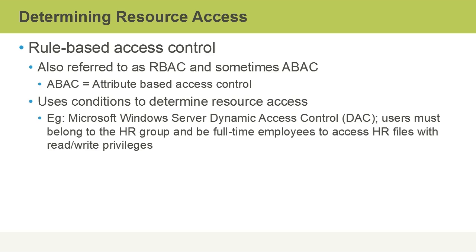Full-time employees could be determined through group membership, but one of the great things with condition or rule-based access control is that we don't have to use groups. In the case of a Windows Active Directory user account, maybe there's an attribute filled in that determines whether that user is full-time or not. So Dynamic Access Control can look at Active Directory attributes instead of just traditional group membership.